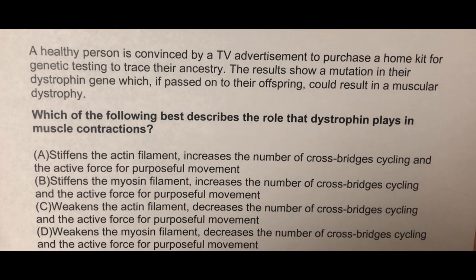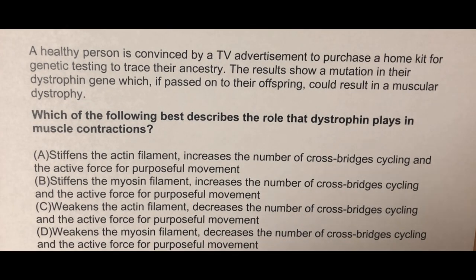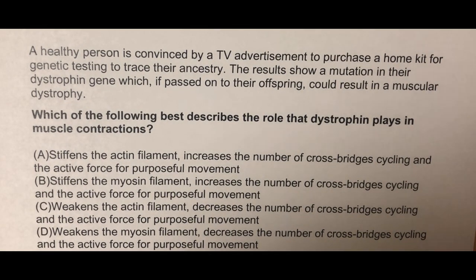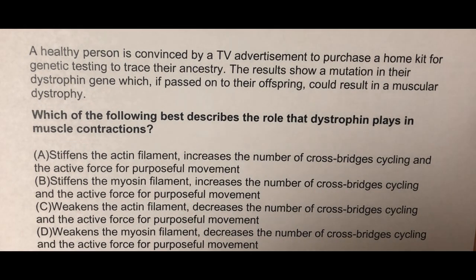Welcome back to Dissect the Question. A healthy person is convinced by a TV advertisement to purchase a home kit for genetic testing to trace their ancestry. The results show a mutation in their dystrophin gene, which, if passed on to their offspring, could result in a muscular dystrophy. Which of the following best describes the role that dystrophin plays in muscle contractions?